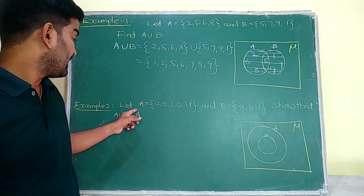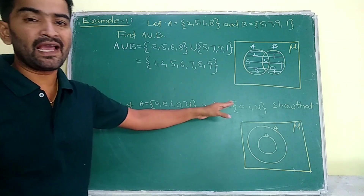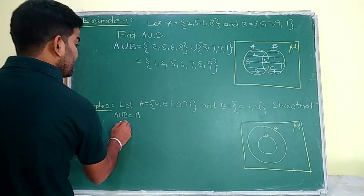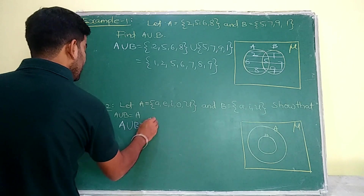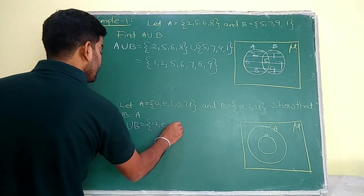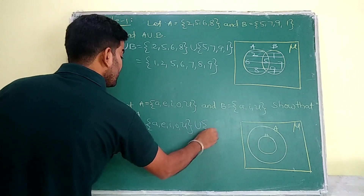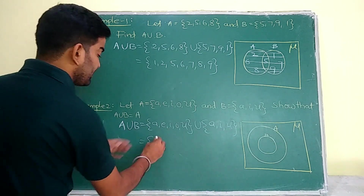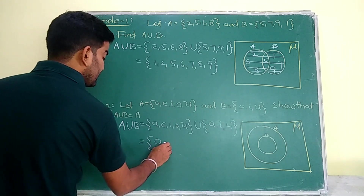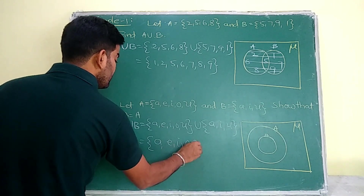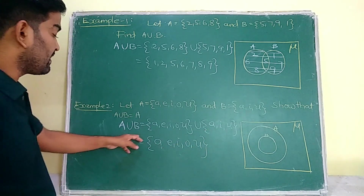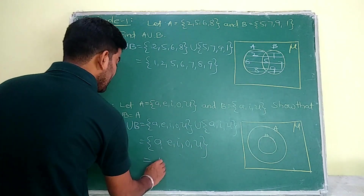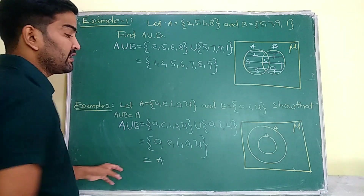Example 2: Let A = {A, E, I, O, U} and B = {A, I, U}. Show that A union B is equal to A. A union B means first write the elements of A: A, E, I, O, U, union B: A, I, U. All the elements of B are there in A — actually B is the subset of A. So A union B = {A, E, I, O, U}, which equals A. A union B is equivalent to A.